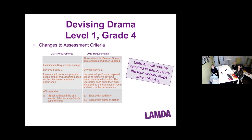For Grade 4 devising, learners will now be required to demonstrate the four working stage areas — mapped across from the acting syllabus. The stimuli have changed for Devised Scene 1 and 2. For Devised Scene 2, learners will perform a prepared scene based on a visual stimulus and must bring that visual stimulus into the exam room and use it in the performance — it could be a painting, photograph, or newspaper image — something visual from which they devise a scene.